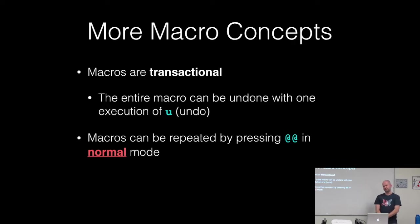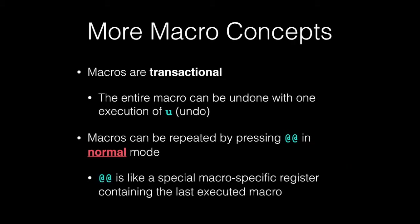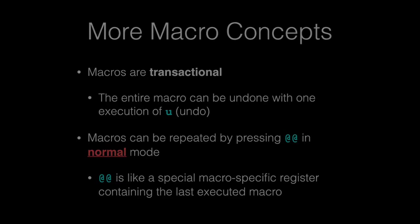You can rerun the same macro you just ran most recently by pressing @@, instead of running @E, @E, @E repeatedly. You can think of @@ as being sort of like a special macro-specific register, but it's not exactly a register in itself. When you run @E, it puts the contents of register E into the @ register — actually, it just records that the last macro run was from register E. So if you change the contents of E after running it and then run @@, it'll actually run whatever's currently in E. Just something to be aware of.